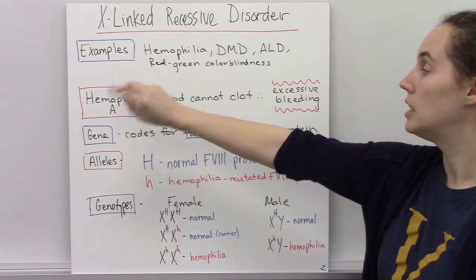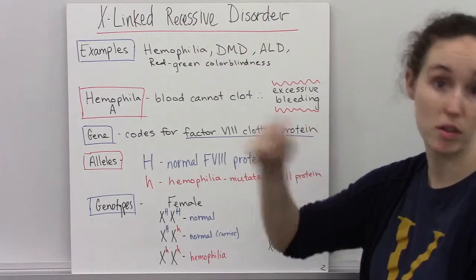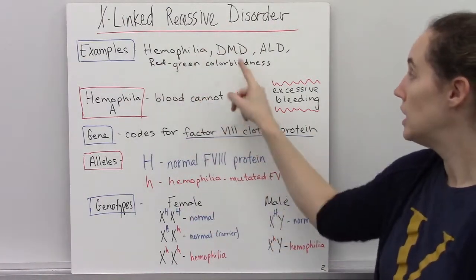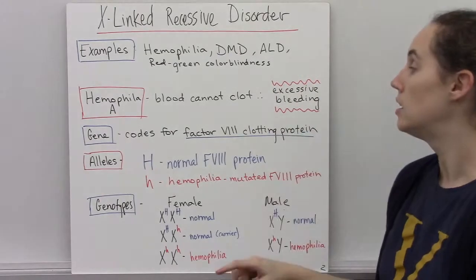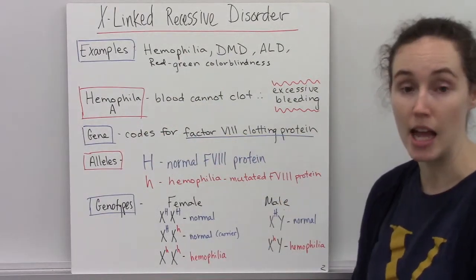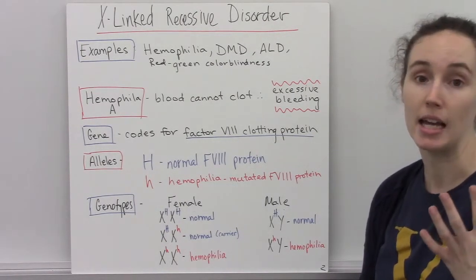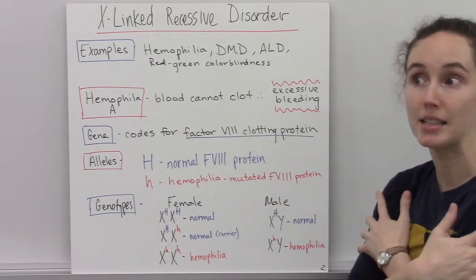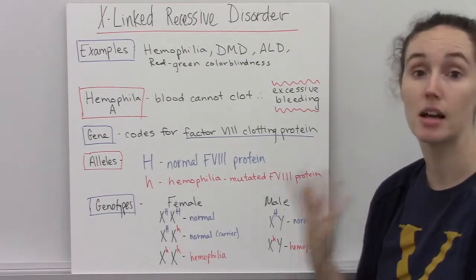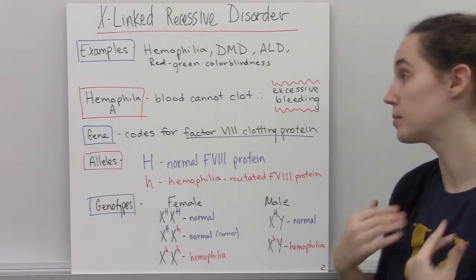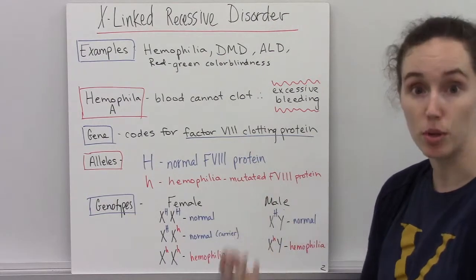Some examples of disorders found on the X chromosome that follow an X-linked recessive pattern of inheritance are hemophilia, Duchenne muscular dystrophy, adrenoleukodystrophy, and red-green color blindness. We're going to look specifically at hemophilia A as our example of an X-linked recessive genetic disorder. Hemophilia A results in your body's inability for your blood to clot, so if you get a cut or a bruise, there would be excessive bleeding externally and internally. There's a gene that codes for a protein called Factor VIII, which is a protein that helps your blood clot.